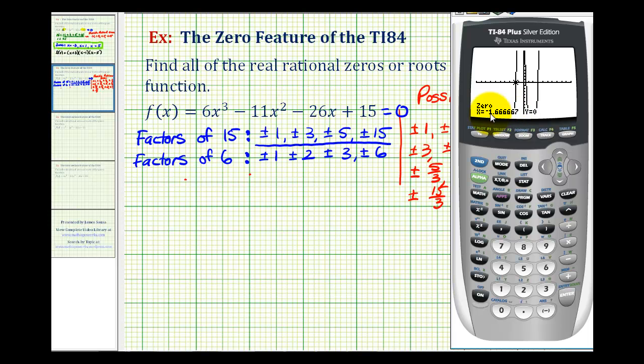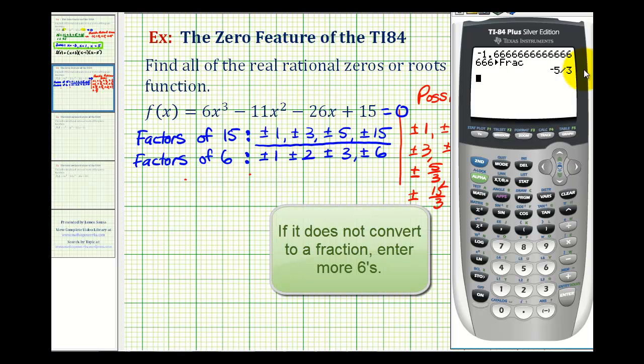Notice the x-intercept occurs when x equals -1.666667. It's rounding here. This is a repeating decimal, which means this is a rational number. This is the same as -1 and 2/3, or -5/3. And just in case you don't recognize this, we could go back to the home screen, pressing second quit, and then enter -1.6 with a bunch of sixes. And then we'll ask the calculator to convert this to a fraction, so we'll press math, enter, enter. And notice how it gives us -5/3, which is one of the rational zeros. Let's go ahead and write that down.